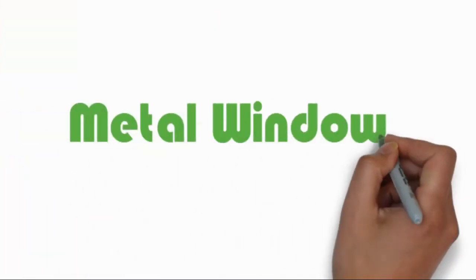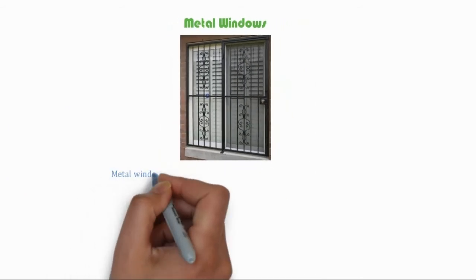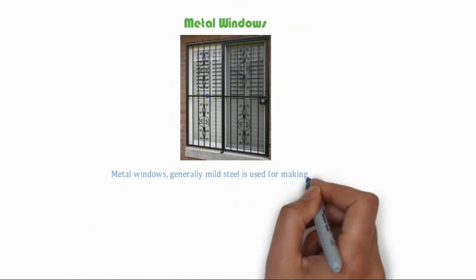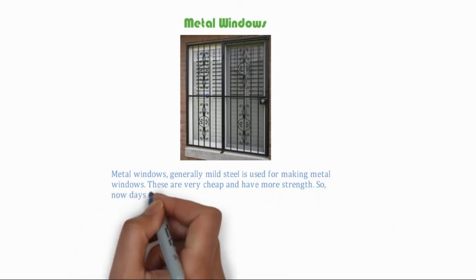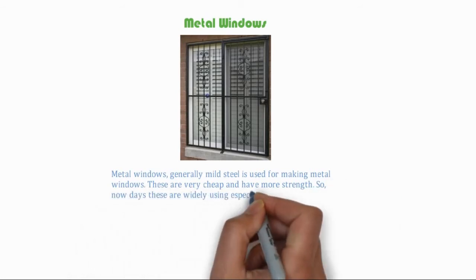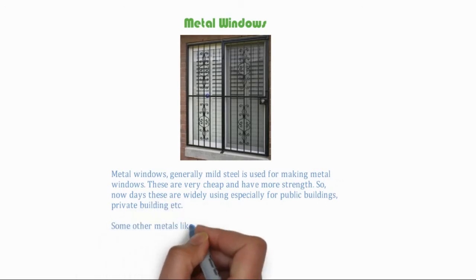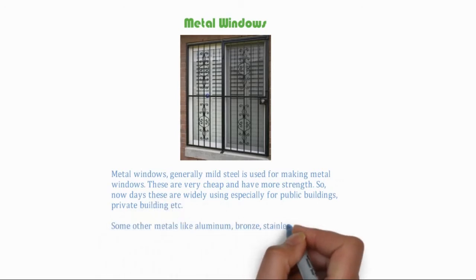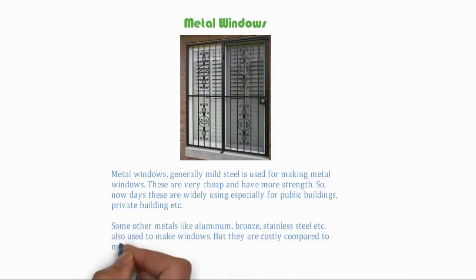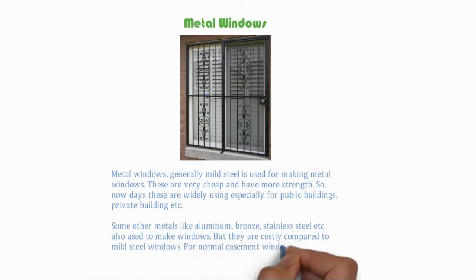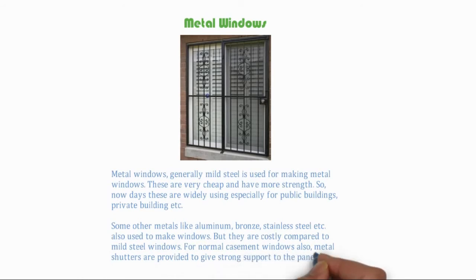Metal windows are generally made of mild steel, which is very cheap and has more strength, so nowadays these are widely used especially for public buildings and private buildings. Some other metals like aluminum, bronze, and stainless steel are also used to make windows, but they are costly compared to mild steel windows. For normal casement windows, metal shutters are provided to give strong support to the panels.